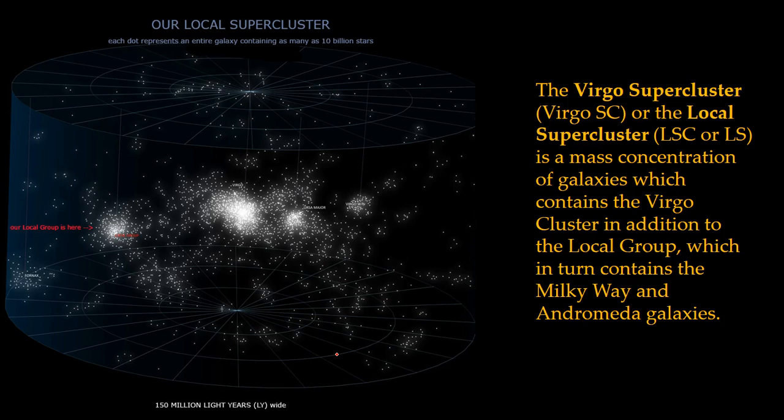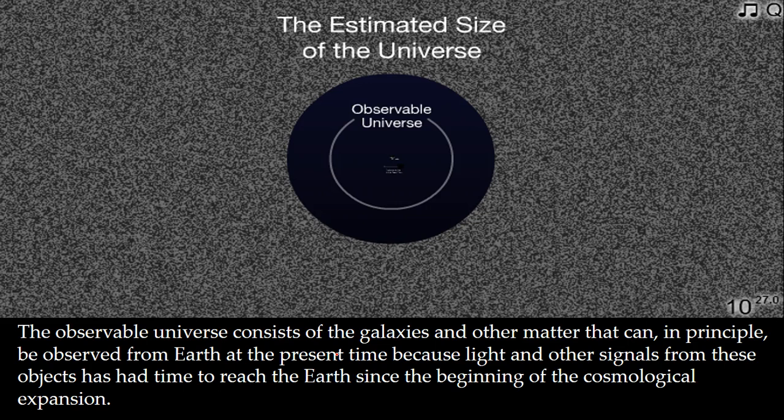What you can see is we're going from very small — we're very small in our address — to getting much bigger. It's like saying your street, then your city, and it just keeps growing. Last but not least is our observable universe. We are part of the observable universe, and this is where we actually finish. The observable universe consists of galaxies and other matter that can in principle be observed from Earth, because light and other signals from these objects has had time to reach Earth. There are things outside which we cannot see yet because time hasn't passed long enough to allow the light to reach us.